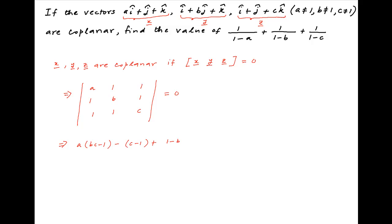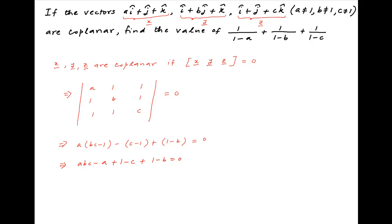Opening up the left hand side, we get A times (BC minus 1) minus (C minus 1) plus (1 minus B) equals zero, which implies ABC minus A plus 1 minus C plus 1 minus B equals zero, which can be written as ABC equals A plus B plus C minus 2. Let's call this Result 1.